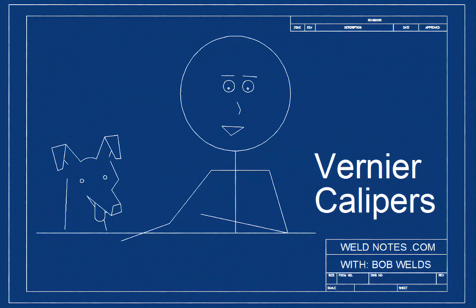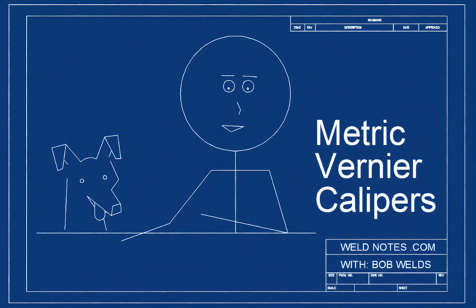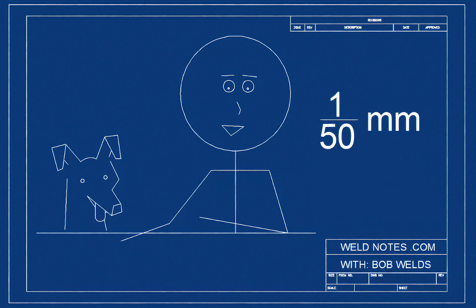Today we're going to look at a metric vernier designed to measure to the nearest 1/50th of a millimeter. That is 0.02 millimeters. See how 1 divided by 50 equals 0.02?